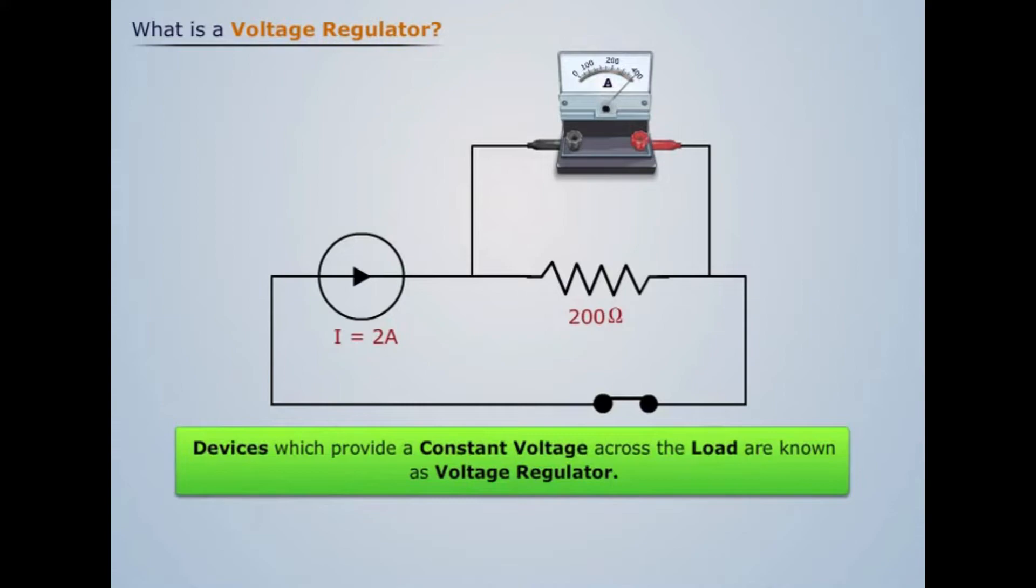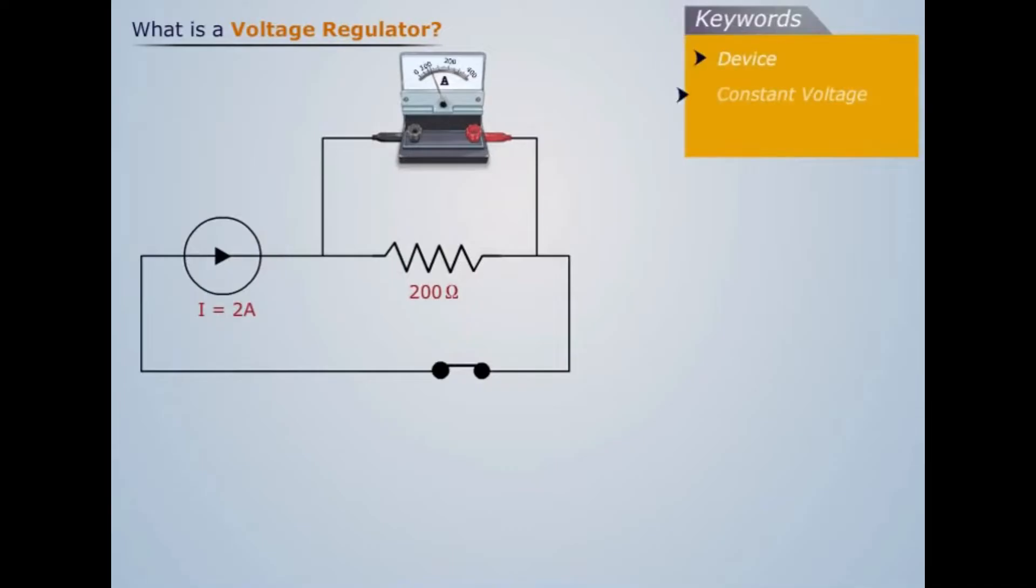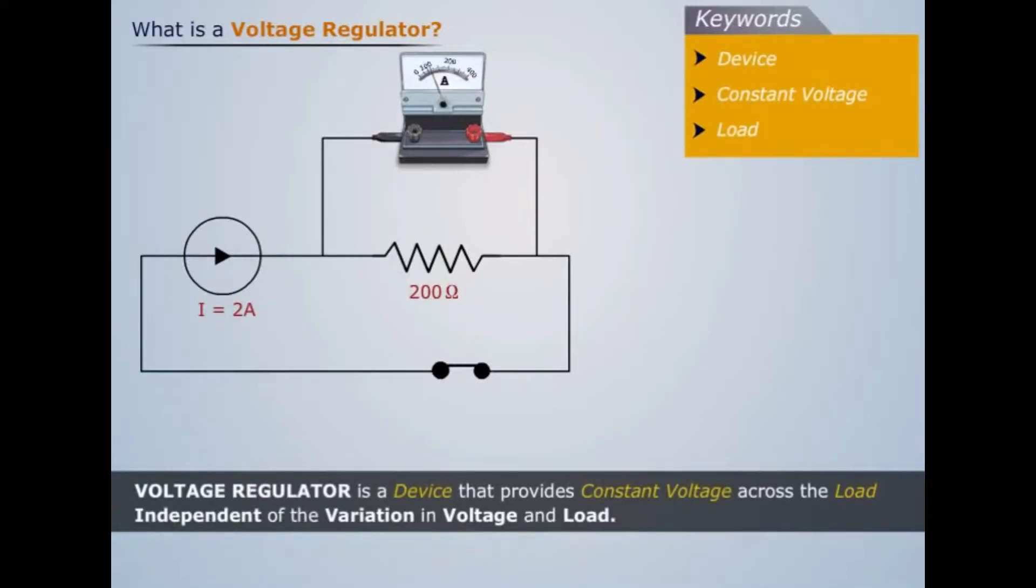Therefore, a need arises for a device which can provide constant voltage across the load. Devices which provide a constant voltage across the load are known as voltage regulators. Thus, a voltage regulator is a device that provides constant voltage across the load independent of the variation in voltage and load.